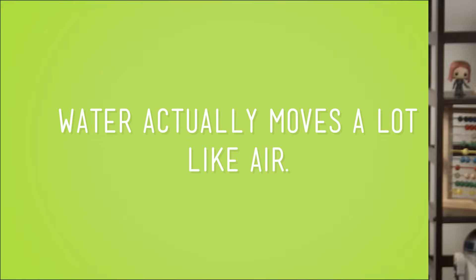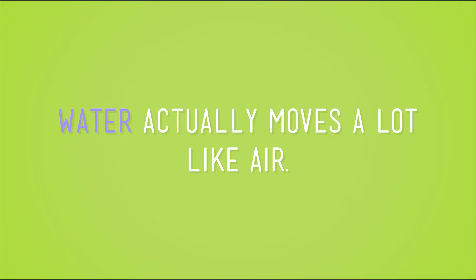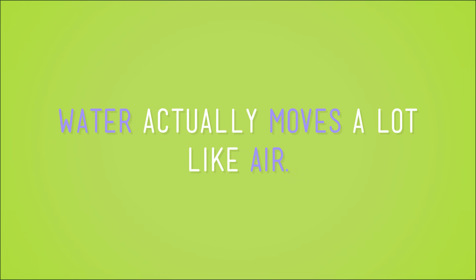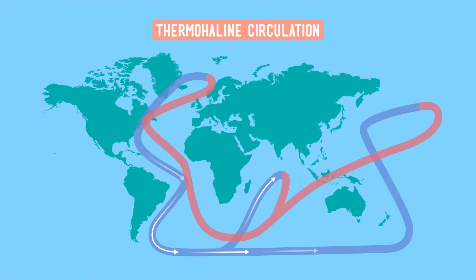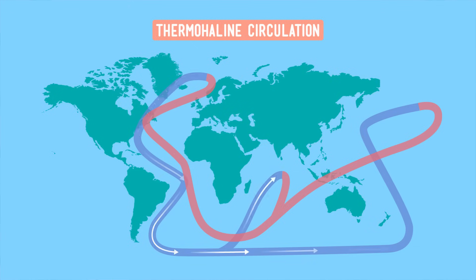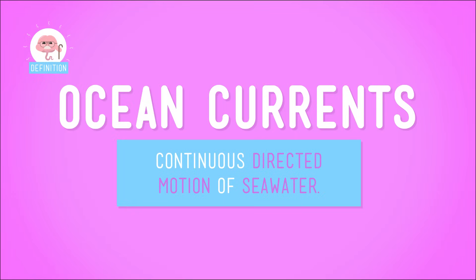And jet streams and wind patterns aren't the only currents flowing around the world. Water actually moves a lot like air. Warm, light water rises and cold, salty, heavy water sinks. Just like with air, the sun heats the water at the equator, and that warm water then spreads out toward the poles, with cold water slowly moving back down toward the equator where it'll warm again in an endless cycle. This massive movement of water, called ocean currents, helps regulate global temperatures just as much as air circulation.